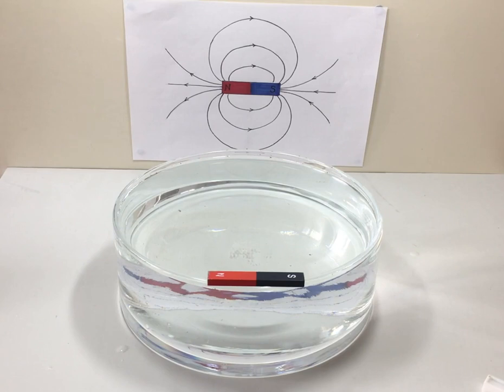One demonstration that you can do to try and explain about magnetic field lines is a floating magnet demonstration.